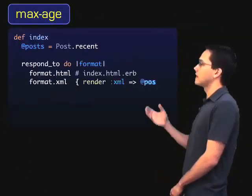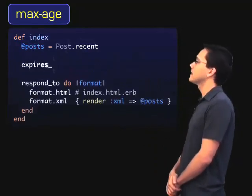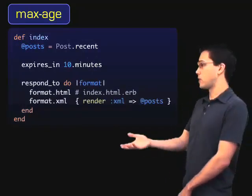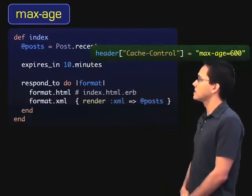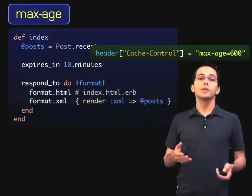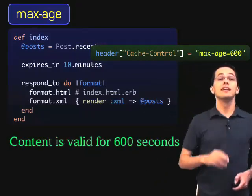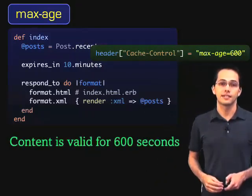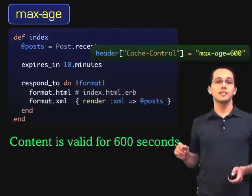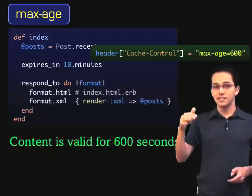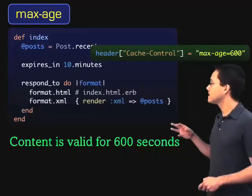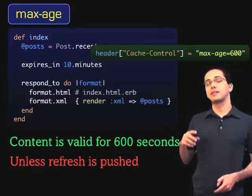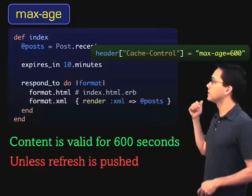Starting with max-age, in order to set that header in Rails, all we need to do inside one of our controller actions is simply add `expires_in 10.minutes`, or `1.hour`, or `1.day`. What this does is it sets the header max-age to 600. This tells the client's browser that the content being sent is valid for the next 600 seconds. So if the user clicks off the page and clicks back onto the page within that 10 minutes, it will simply load what it has in its cache. However, what I've seen with most browsers is that if a user presses the refresh button, it is going to do a round trip to the server every time and ignore the max-age header.